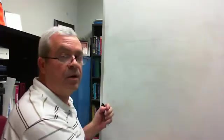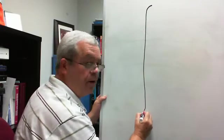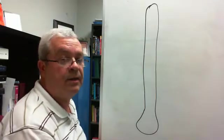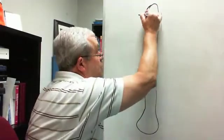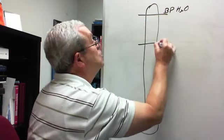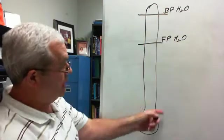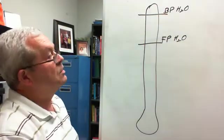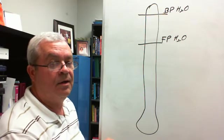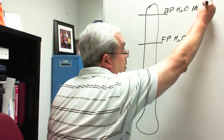Let's draw an imaginary thermometer and try this. I'm going to put some very well-known points on this imaginary thermometer. Let's put the boiling point of H₂O and the freezing point of H₂O, and let's put some actual temperatures in degrees Celsius. What is the boiling point of water in degrees Celsius? It is 100 degrees Celsius.